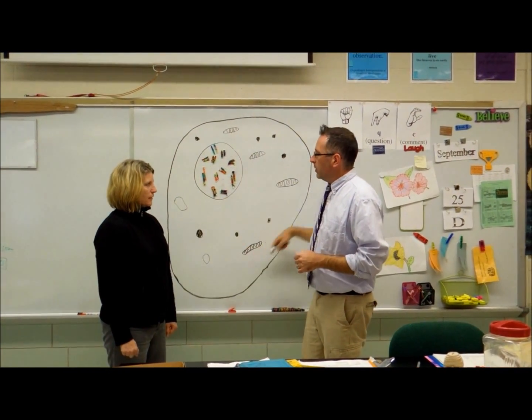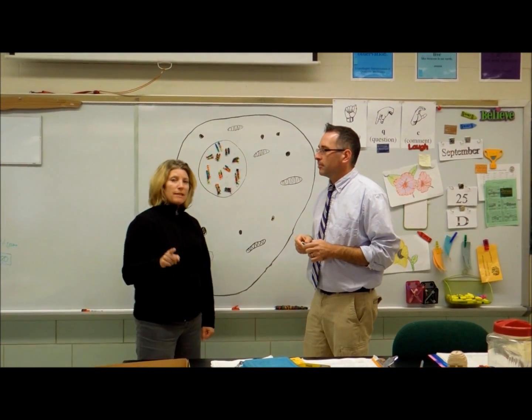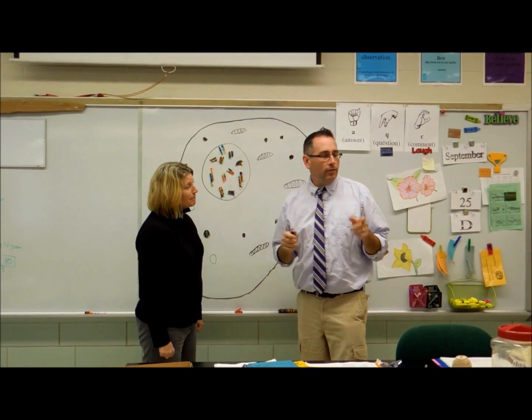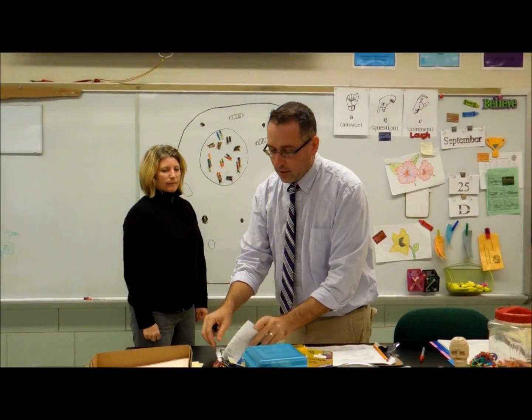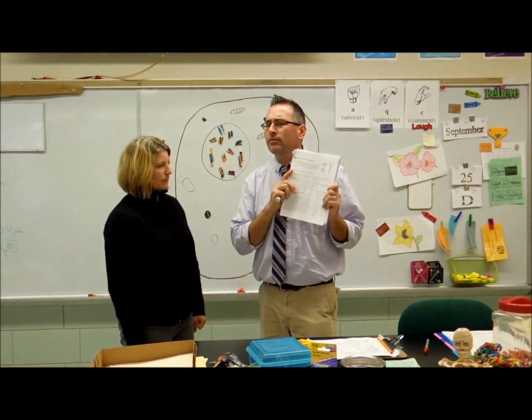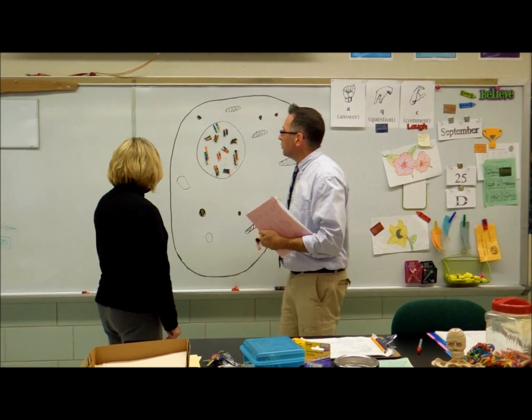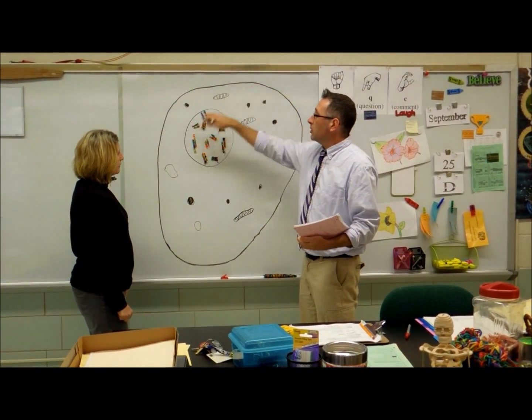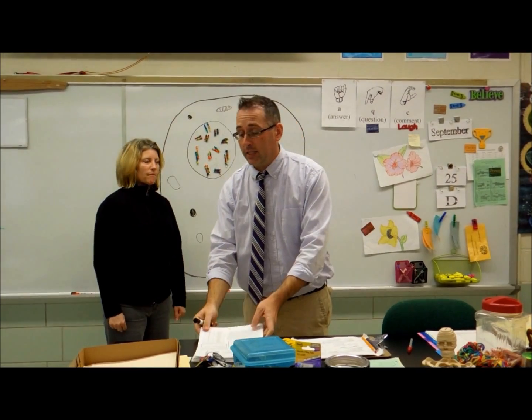Do you think this could be a human cell if it has 22 chromosomes? No. Human cells have 46 chromosomes in their body cells. Do you know of anything that has 22, Professor Smartycorn? I do. If you look in your unit pack, there's a page with a chart listing the number of chromosomes in lots of different organisms. Toads have 22 chromosomes, so this must be a model of a cell from a toad.